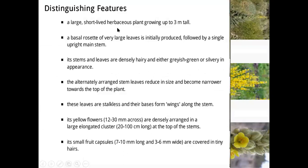A large short-lived herbaceous plant growing up to 3 meters tall. A basal rosette of very large leaves is initially produced, followed by a single upright main stem. Stem and leaves are densely haired and either greyish green or silver in appearance. Yellow flowers are densely arranged in a large elongated cluster at the top of the stem, and small seed capsules are covered with tiny hairs.